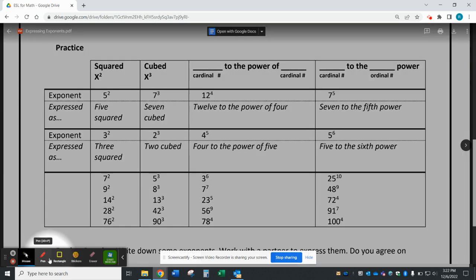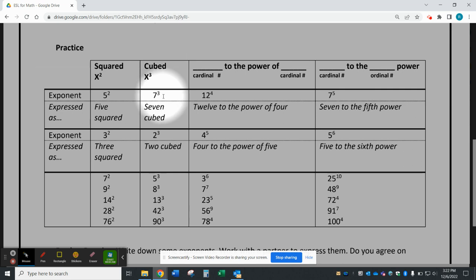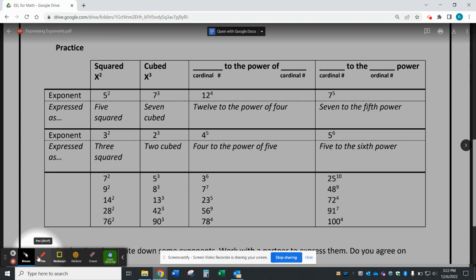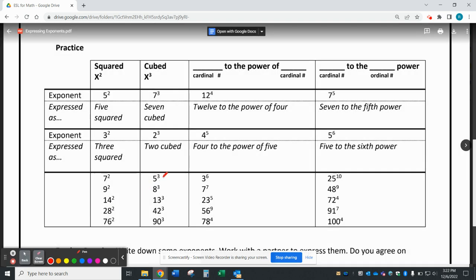In this column, we're going to focus on numbers that are cubed, such as 7 cubed and 2 cubed. We can express this as 5 cubed, 8 cubed, 13 cubed, and so on.